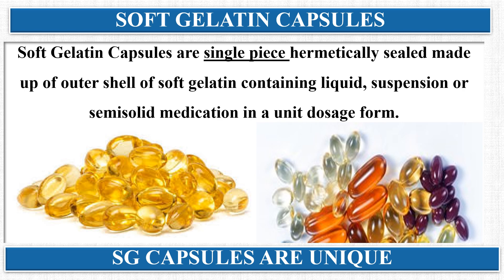By definition, soft gelatin capsules are single-piece, hermetically sealed capsules made up of an outer shell of soft gelatin, containing a liquid, suspension, or semi-solid medication in a unit dosage form. These are unit dosage forms made up of a soft gelatin shell. Unlike hard gelatin capsules, which are two-piece capsules, soft gelatin capsules are one-piece capsules and are soft in nature — that's why they are referred to as soft gelatin capsules.